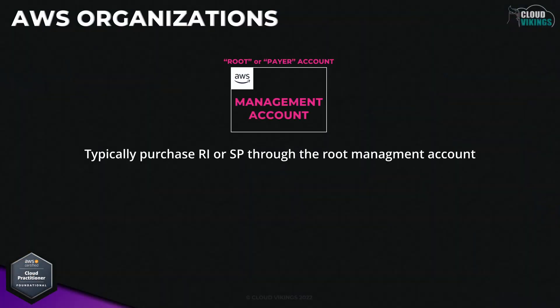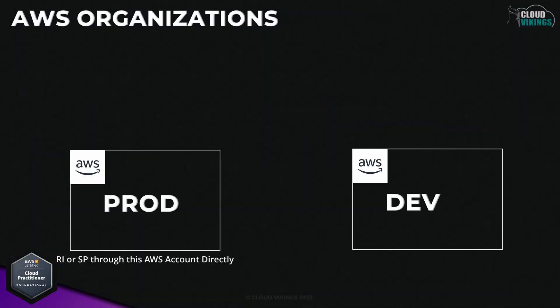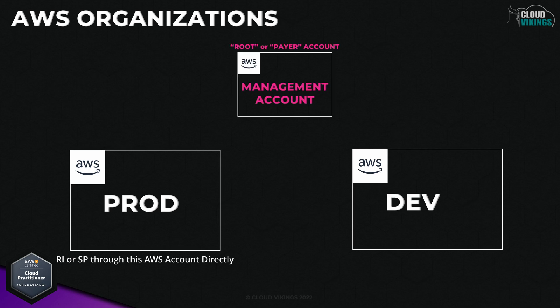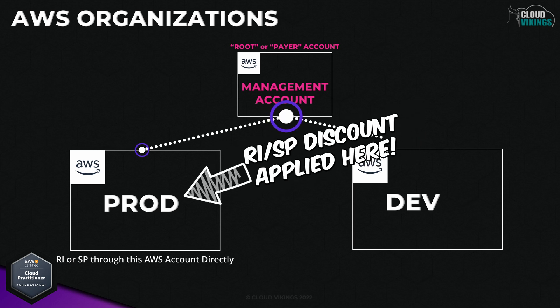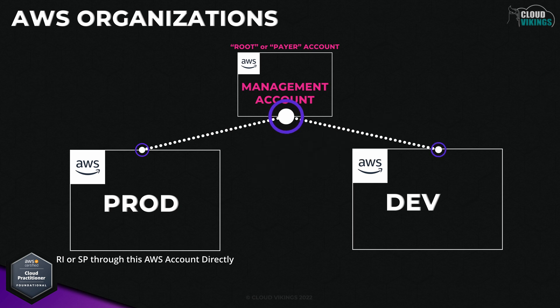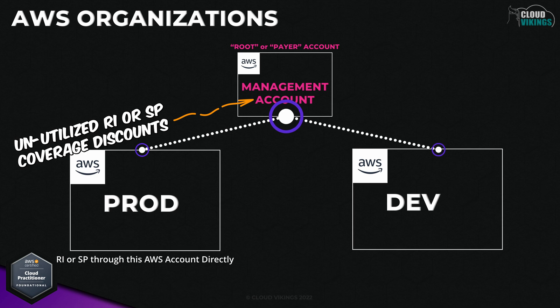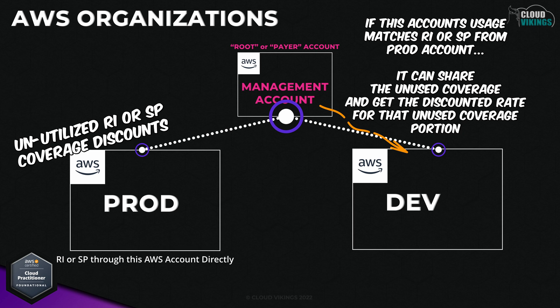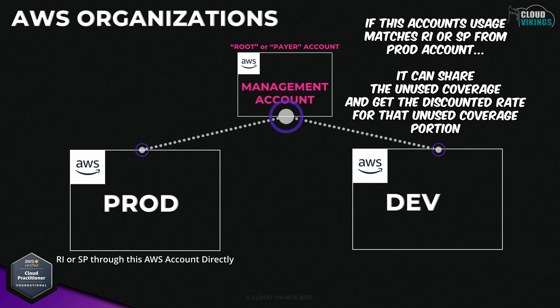Organizations typically purchase savings plans and RIs through the root management account, but there are times where this may not be possible due to different cost centers or accounting aspects. For example, an AWS account may have had pre-existing savings plans or RIs purchased through it before a consolidated billing linked account structure was created. In this case, the account that had the RI or savings plan purchased on it gets all the discounts applied to it first. If there's leftover coverage due to underutilization, the savings then pass up to the rest of the linked accounts. So pre-existing RIs or savings plans done through linked accounts can still share the discount.